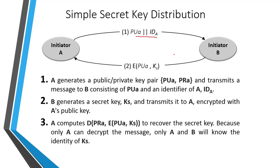This is the asymmetric key distribution using asymmetric encryption. After that, A discards its public key and private key, and B discards the public key of A.